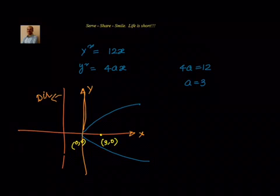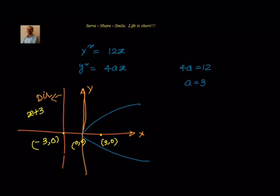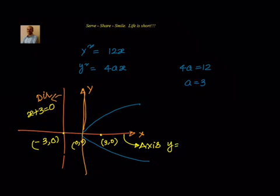Since the focus is at (3, 0), automatically we know the directrix passes through the point (-3, 0). If that is (-3, 0), it is a vertical line where the x-coordinate is constant. So the equation of the directrix is x + 3 = 0. Now the equation of the axis of the parabola is nothing but the x-axis, which is y = 0.